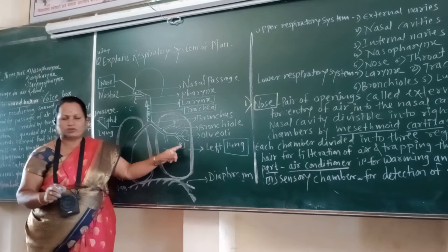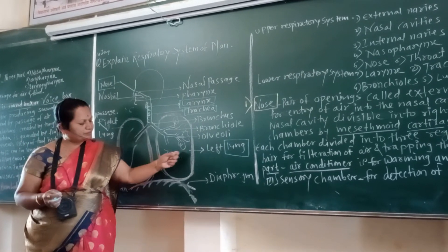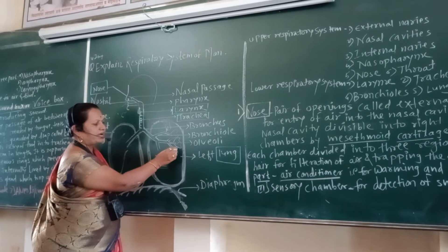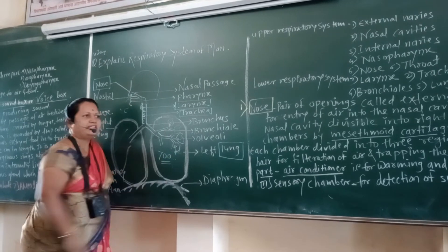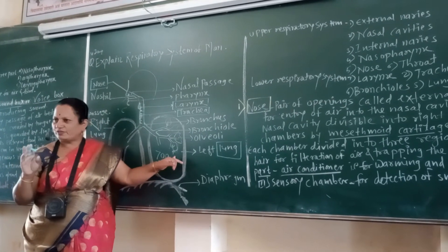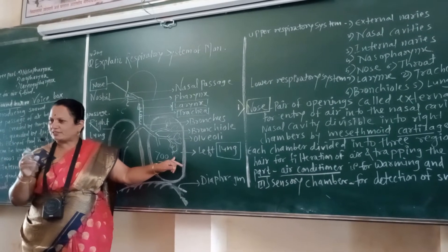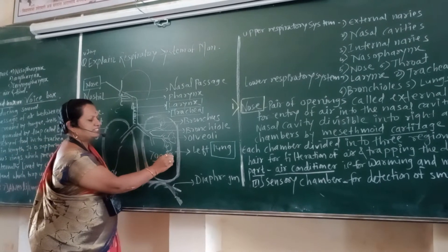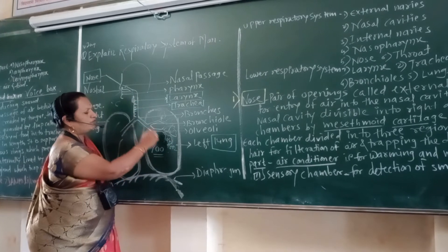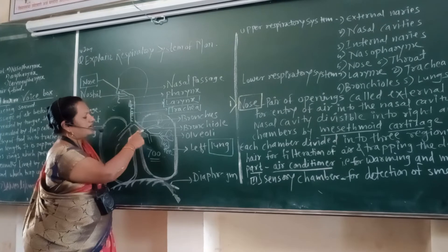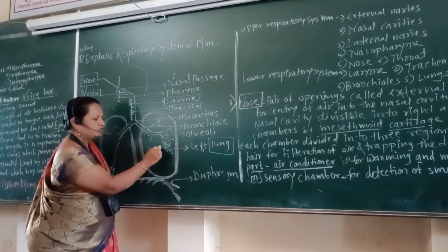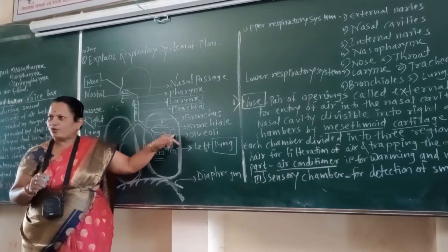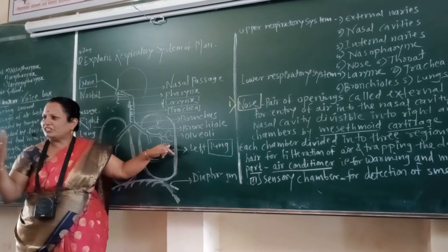When air enters into the alveoli, they expand, and when air is forced out during expiration, the alveoli contract. Each alveolus is richly supplied with capillaries — arterioles and venules. Arterioles surround the alveoli and deoxygenated blood carrying CO2 enters into the alveoli. O2 from the nose, trachea, and bronchus enters into the alveoli, and that O2 then enters into the blood capillary. Exchange of O2 and CO2 takes place through the wall of the alveoli and blood capillary, and that O2 is supplied to each and every cell of the body.